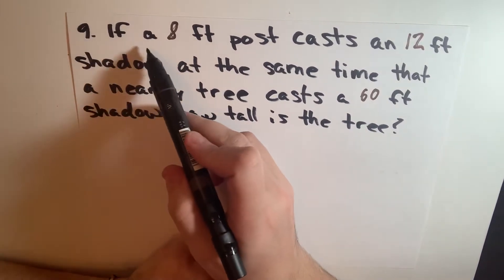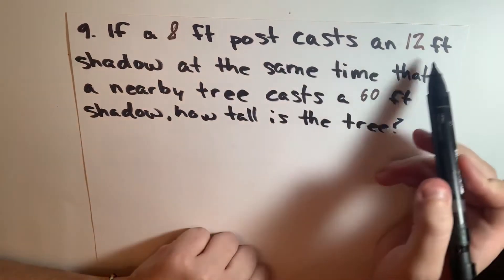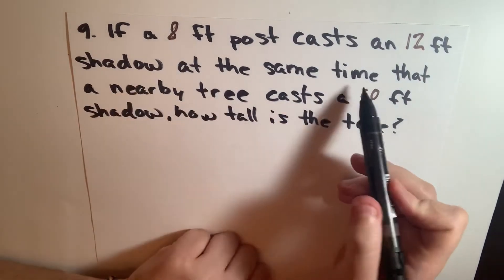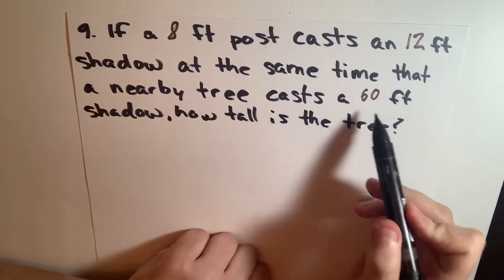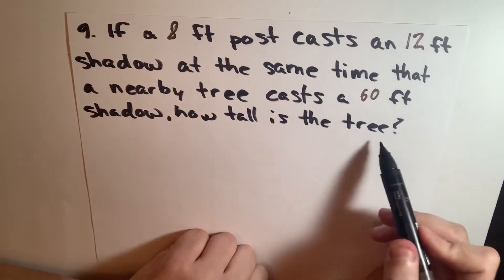For question 9, it says, if an 8-foot post casts a 12-foot shadow at the same time that a nearby tree casts a 60-foot shadow, how tall is the tree?